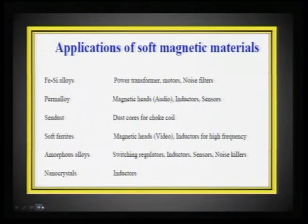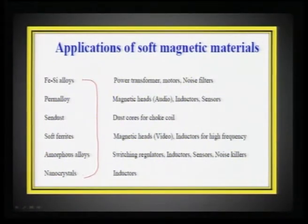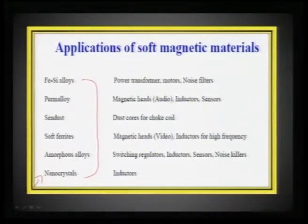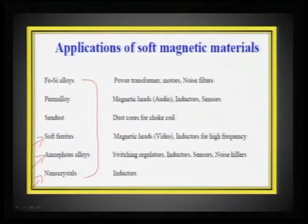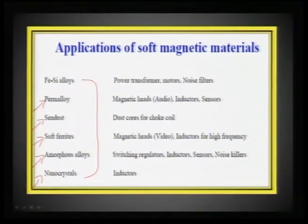The representative soft magnetic materials include nanocrystals, which show soft magnetic response; amorphous alloys, which are traditionally soft magnetic; and ferrites, which are mostly soft magnetic materials, though we also have bubble memory materials which are hard ferrites. Other groups include sendust and permalloy, which is used in almost every other application, and some alloys also show soft magnetic response.